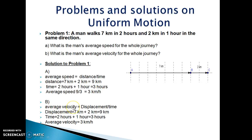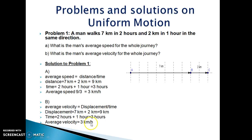Next, to find average velocity, the formula is displacement upon time. From the figure, the person is moving from A to C in the same direction, so total distance covered equals total displacement, which is 9 km. Time taken to cover this displacement is 3 hours. So average velocity is equal to 3 km per hour.